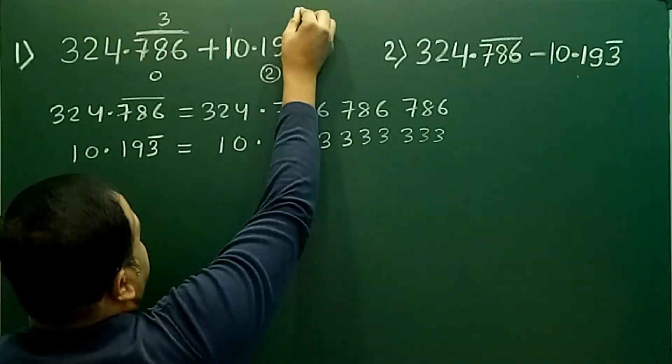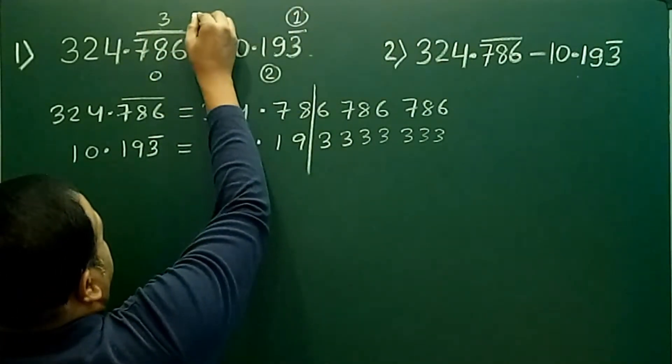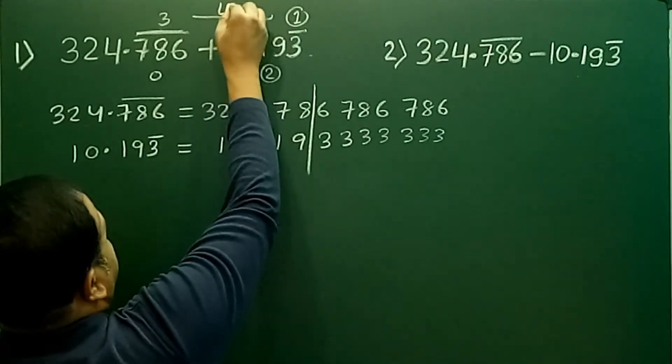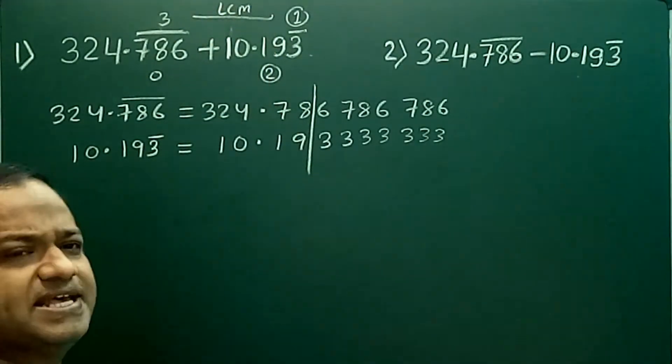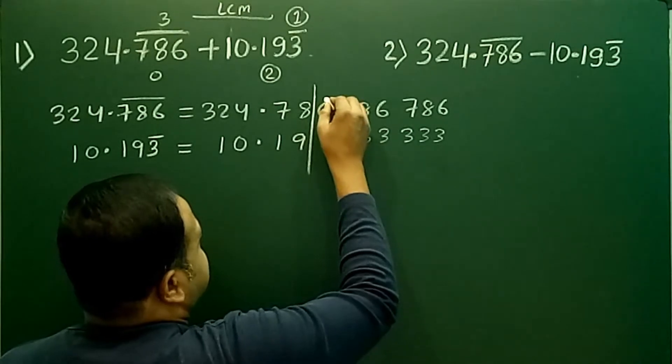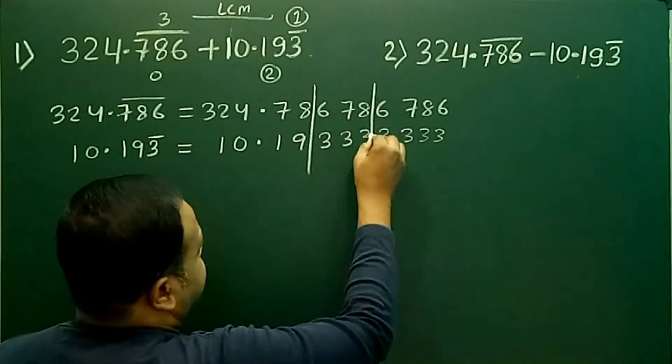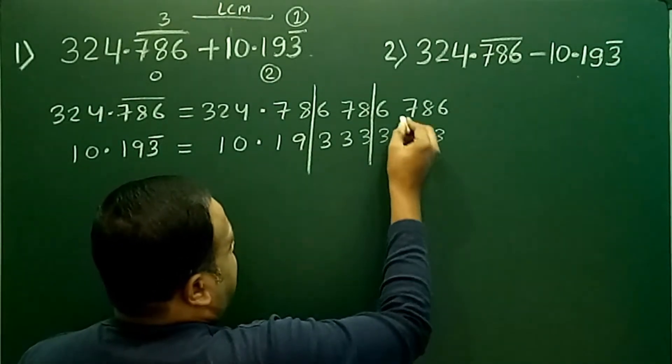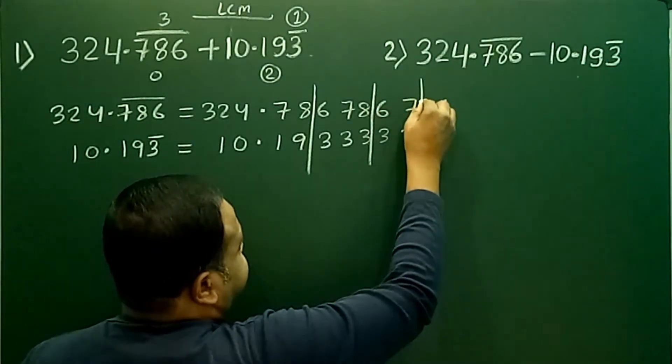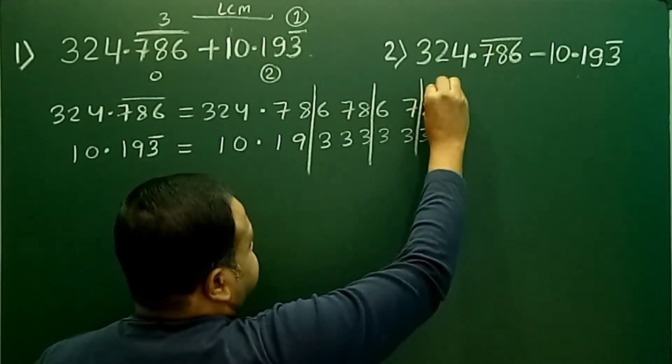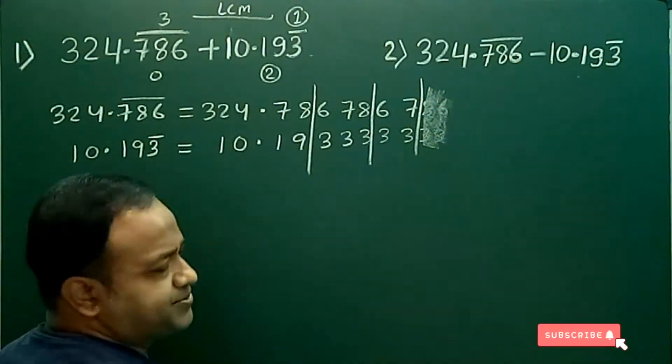And in this one there is 1, so 3 and 1 I will take LCM. If I take the LCM of 3 and 1 we get 3, so I will take three digits 6 7 8 and 3 3 3. Now in the last part I will take only two digits, the rest of the digits are cancelled out.